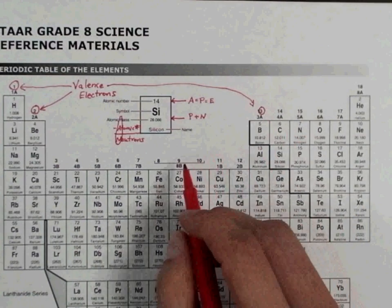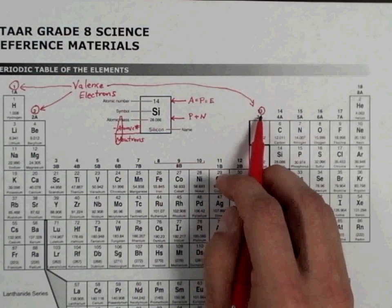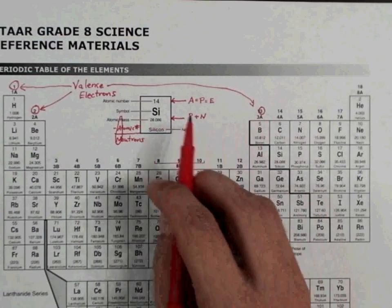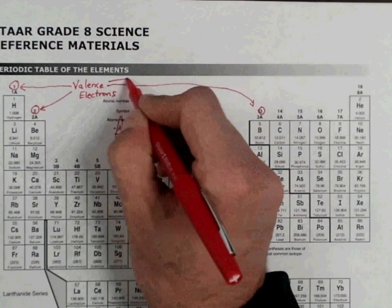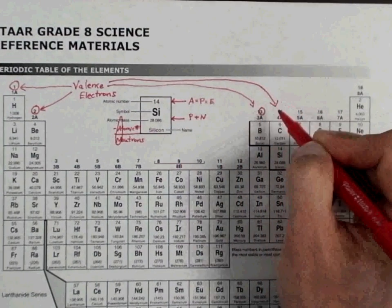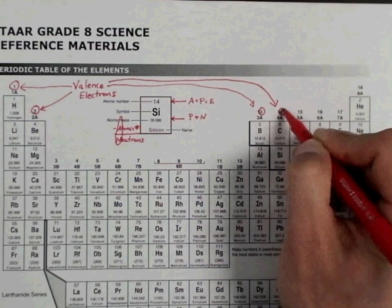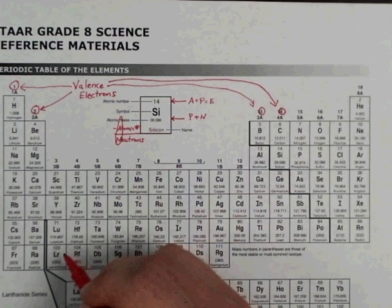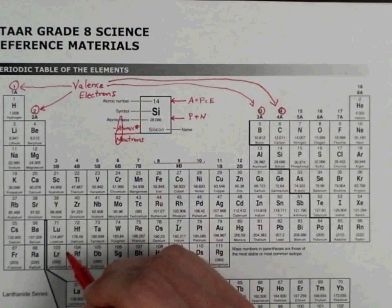For example, this one is group 13, but only three valence electrons. And then the next one would be group 14, but only four valence electrons. So everything in that group or in that family will have the same number of valence electrons and the same reactivity.